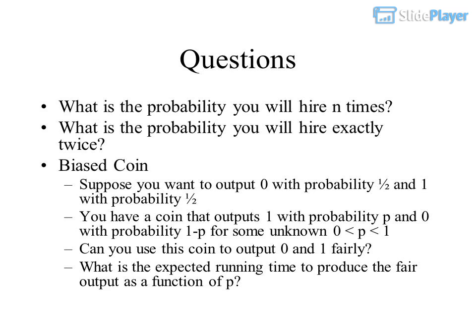Biased Coin Problem: suppose you want to output 0 with probability one-half and 1 with probability one-half. You have a coin that outputs 1 with probability p and 0 with probability 1 minus p, for some unknown p where 0 is less than p less than 1. Can you use this coin to output 0 and 1 fairly? What is the expected running time to produce the fair output as a function of p?